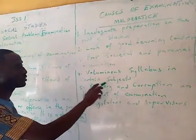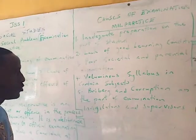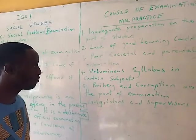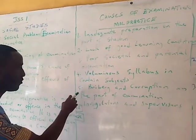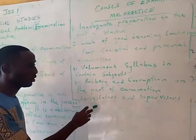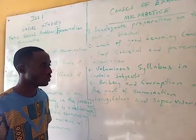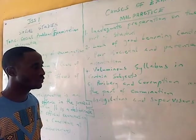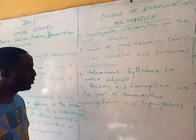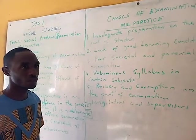The fourth cause is voluminous syllabuses in certain subjects. If a subject is too voluminous, students will find it difficult to comprehend and write the examination without resorting to malpractice. The fifth cause is bribery and corruption on the part of examination administrators and supervisors. These supervisors, who are supposed to ensure the examination is free from malpractice, are also involved in collecting money from parents and students to ensure students pass even with malpractice.